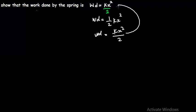So to show that the work done by the spring is actually this, or is actually a half kx squared, in the equation here, we are given k to be the spring constant. The x is our displacement from the equilibrium position.